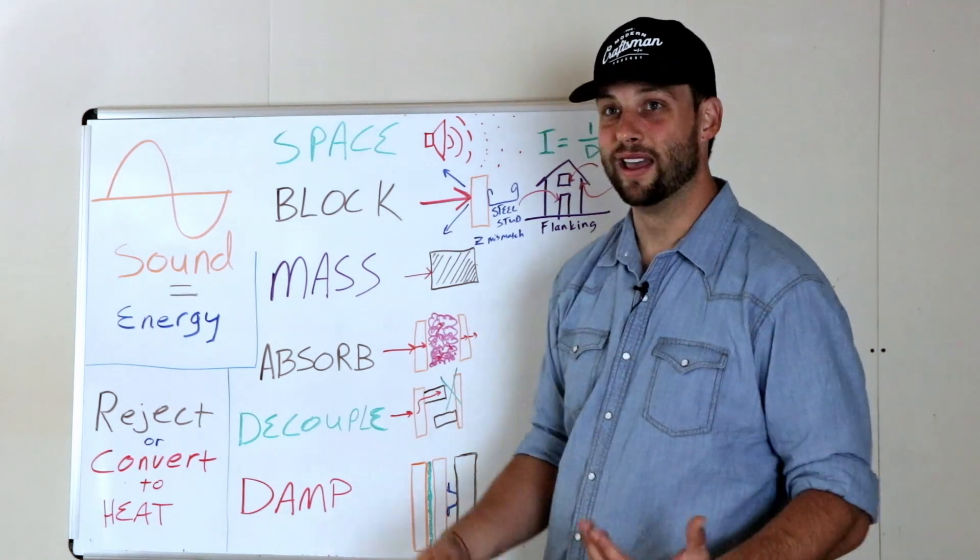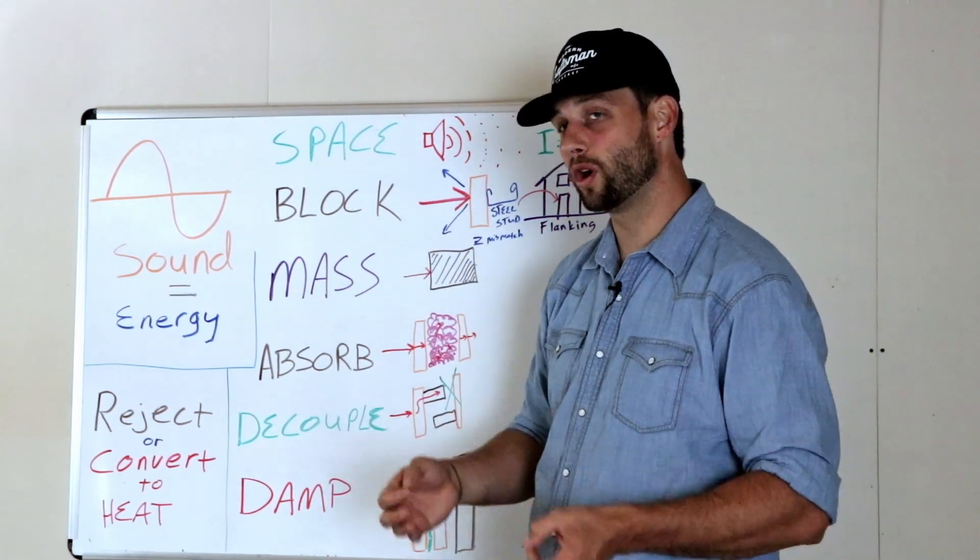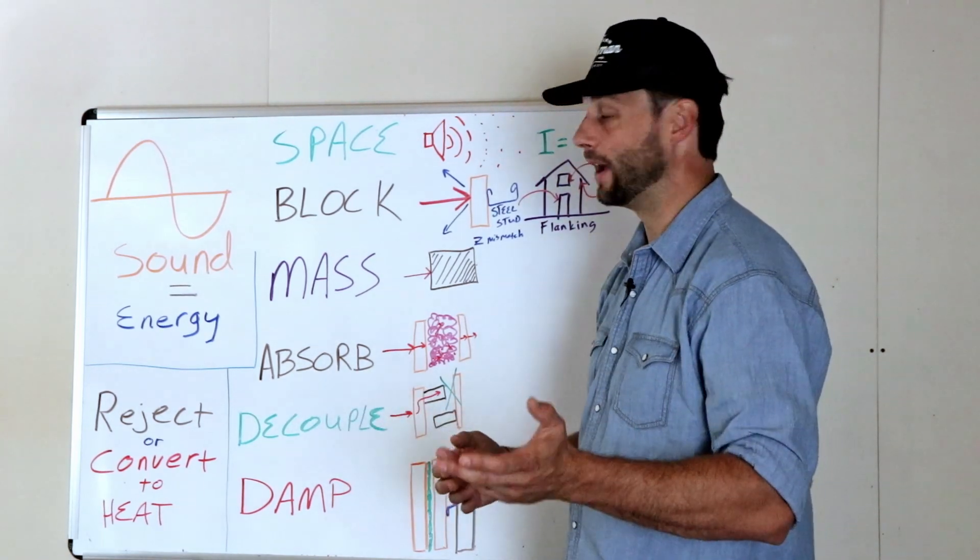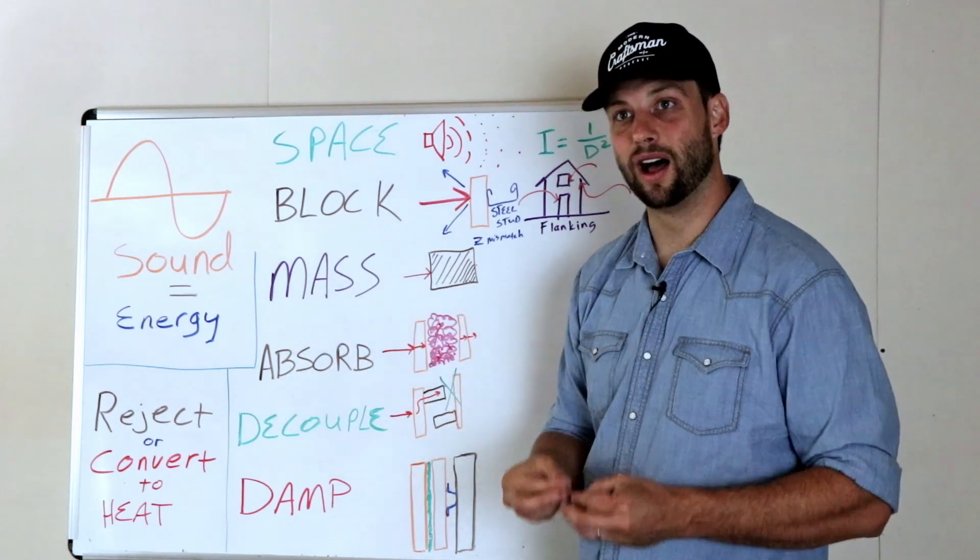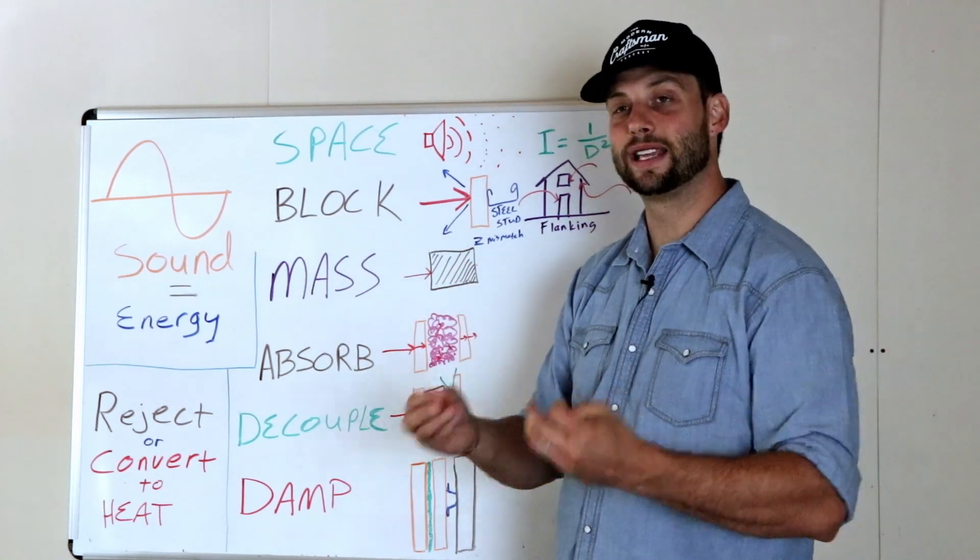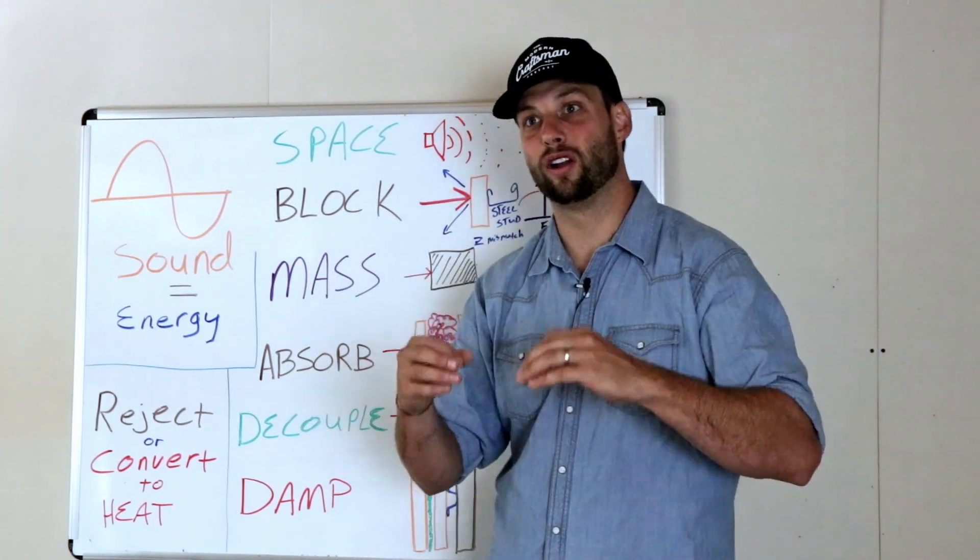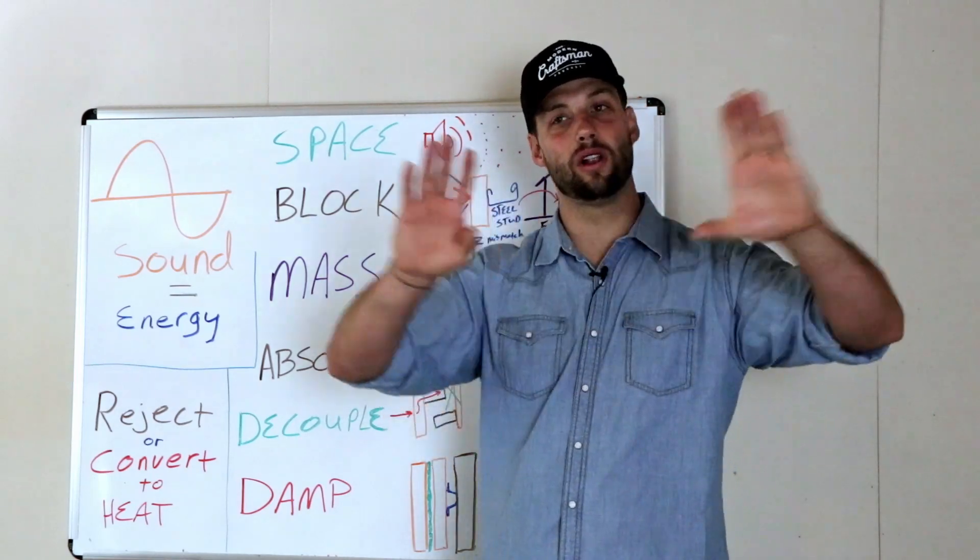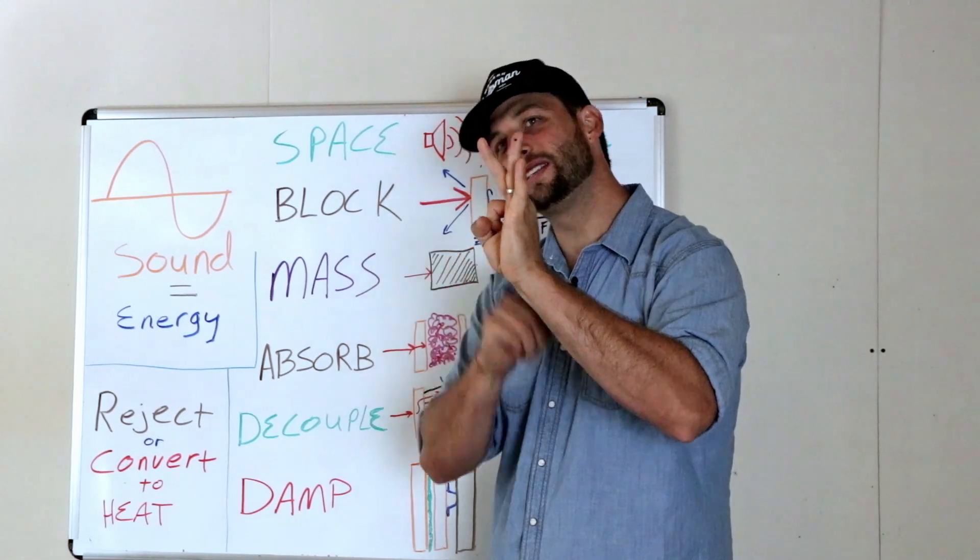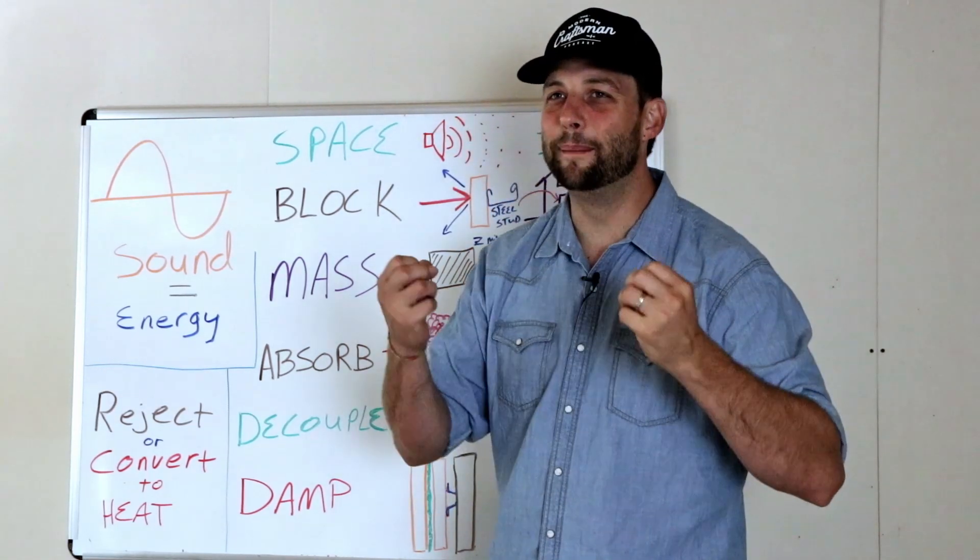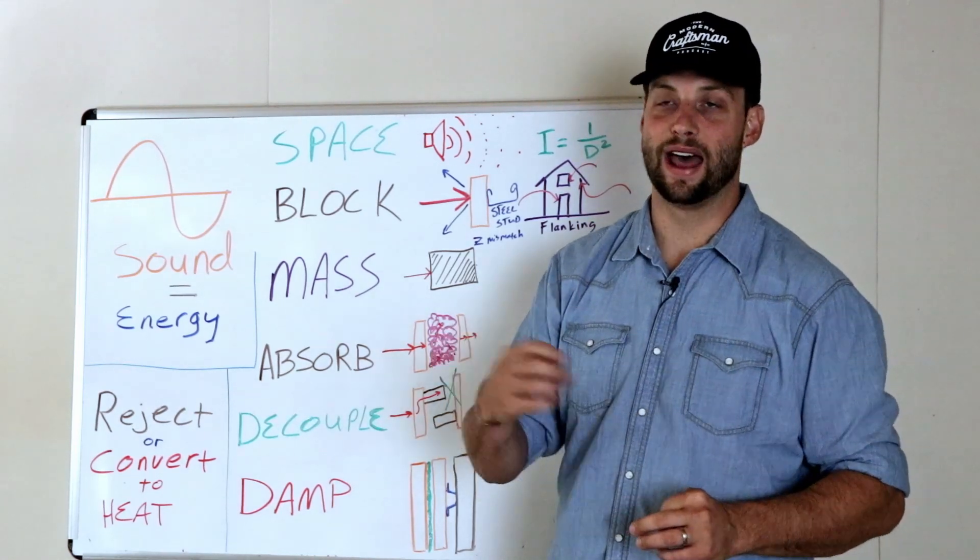Second one is block. This is one of my favorite and probably the most underutilized portion, or the most gotten wrong, I guess, would be a way of saying it, in building. People just don't seal up their enclosures to keep sound from coming in. Sound is a wave, and it has a property called diffraction. So if you've got a solid wall, even if this wall is completely soundproof, if you've got a solid wall, and it's got a little bitty tiny hole in it, you will be amazed at how much sound comes through that little bitty hole.